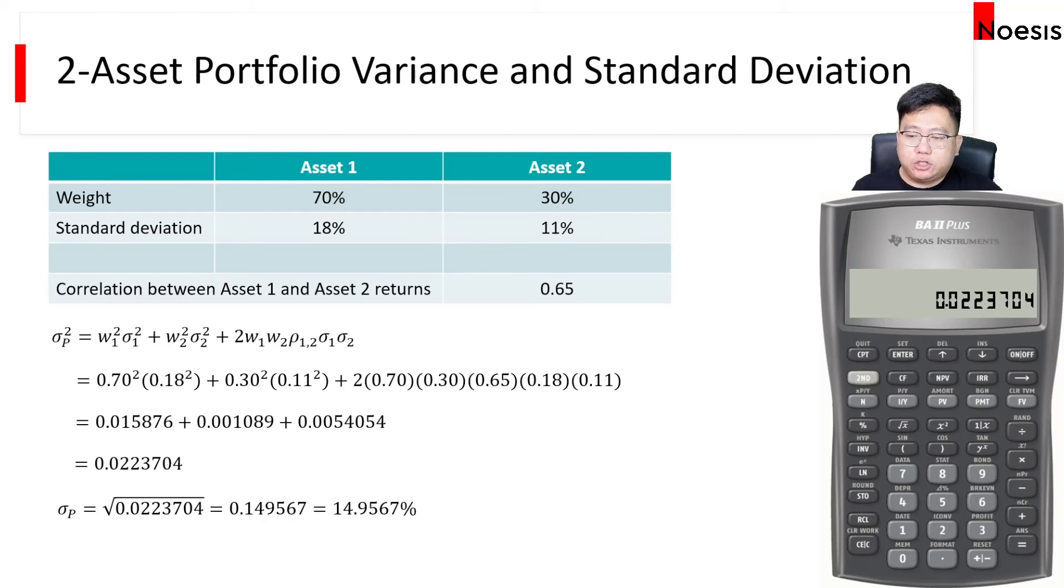If you want to get the standard deviation, all you need to do is take the square root of the variance. So that's 0.149567. Convert that to percentage. So that's 14.9567%.